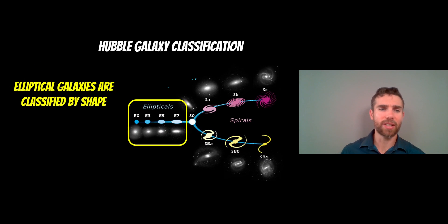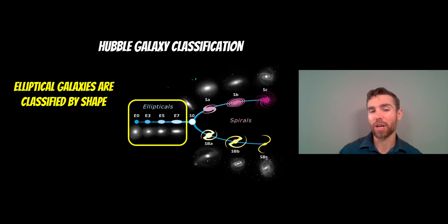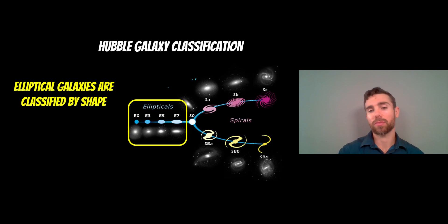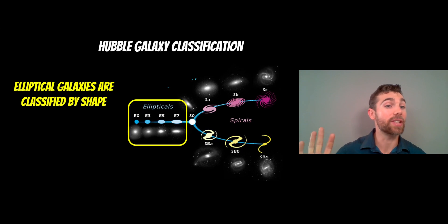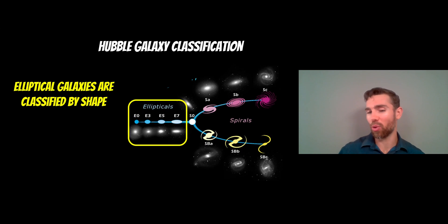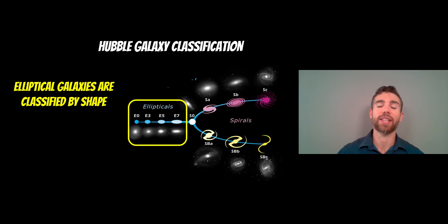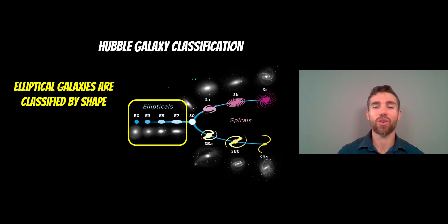Elliptical galaxies sit on the other side of the tuning fork and are classified purely by shape — that classification mostly comes down to their orientation as viewed. The ellipticals and spirals become important a little later in the video because they relate to the central regions in spiral galaxies, which might sound bizarre, but those central regions can be like miniature versions of ellipticals or spirals.